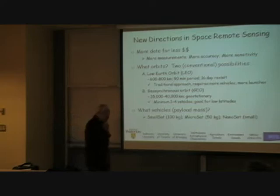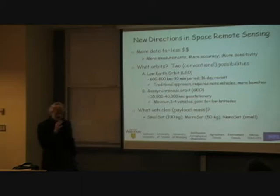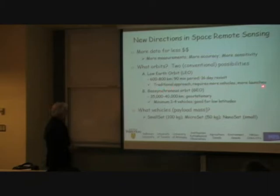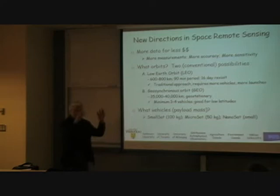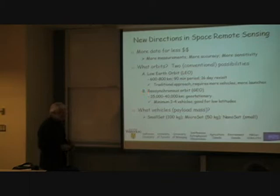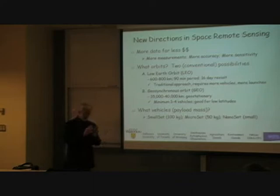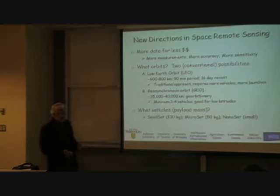Well, you're limited by physics, and that means there are roughly speaking two orbits — I'll tell you about the third shortly. The two conventional possibilities are low Earth orbit, which has certain parameters. If you're going to get more measurements in low Earth orbit, you're not very high, and you need a lot of vehicles — you have to fly constellations like the A-train and things like that. Then there's geosynchronous orbit.